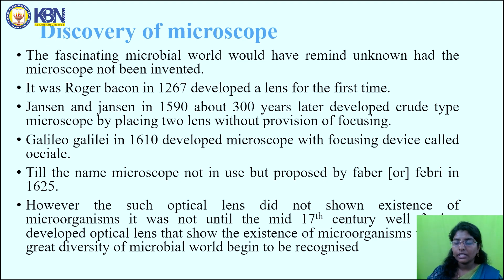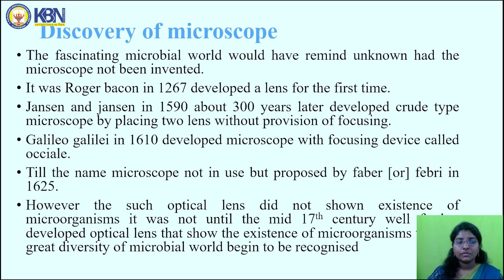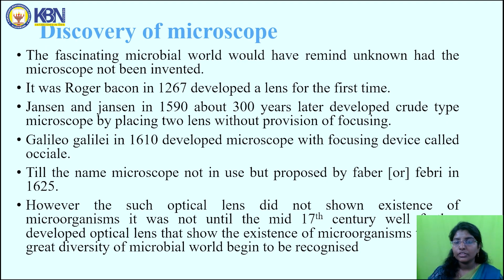Despite the fascinating microbial world, it would have remained unknown had the microscope not been invented. It was Roger Bacon in 1267 who developed a lens for the first time. Then Janssen and Janssen in 1590, about 300 years later, developed a crude type of microscope by placing two lenses without a provision for focusing. Galileo Galilei in 1610 developed a microscope with a focusing device.